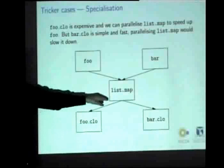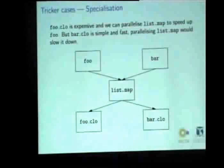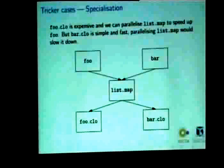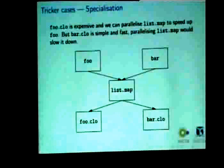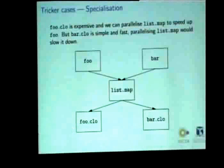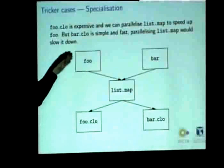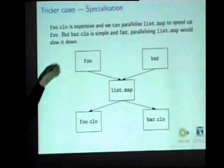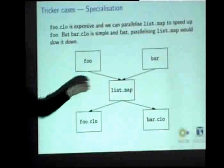It can pass this into the list map function, which is a general way of doing the same thing to everything in a list and returning a new list. So if Foo's closure is expensive and therefore we'd like to parallelize, like we'd like to speed up Foo's execution because therefore Foo will be expensive, we can parallelize map over lists.